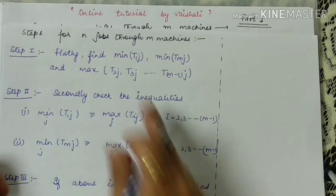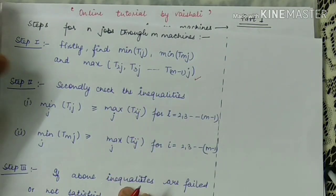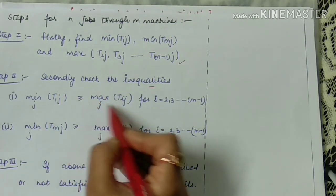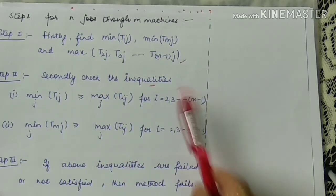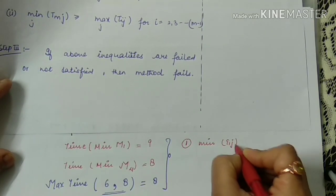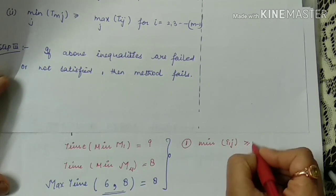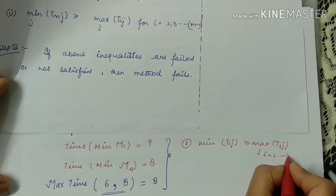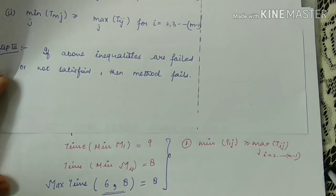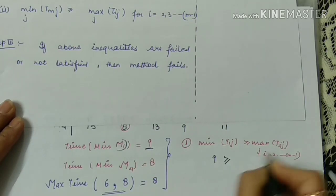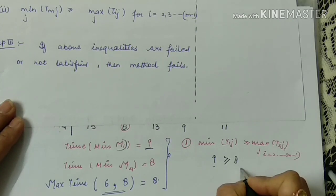With these three values found, we apply Step 2: check the inequalities. The first inequality is: minimum of T1j (first machine) must be greater than or equal to the maximum of Tij for intermediary machines. Putting the values: minimum of M1 is 9, and the intermediary maximum is 8. Yes, 9 is greater than 8, so the first condition is satisfied.